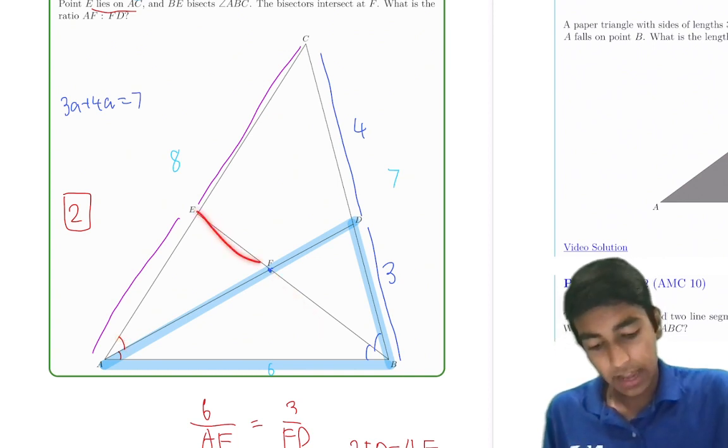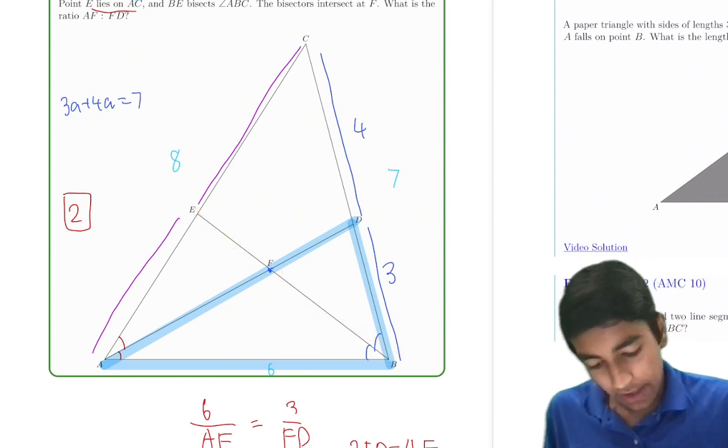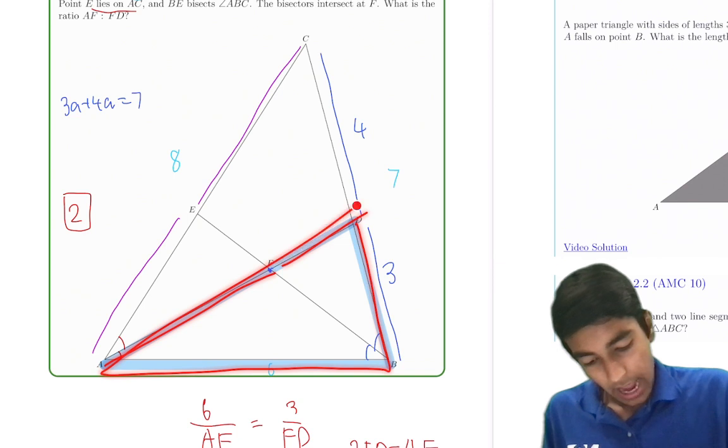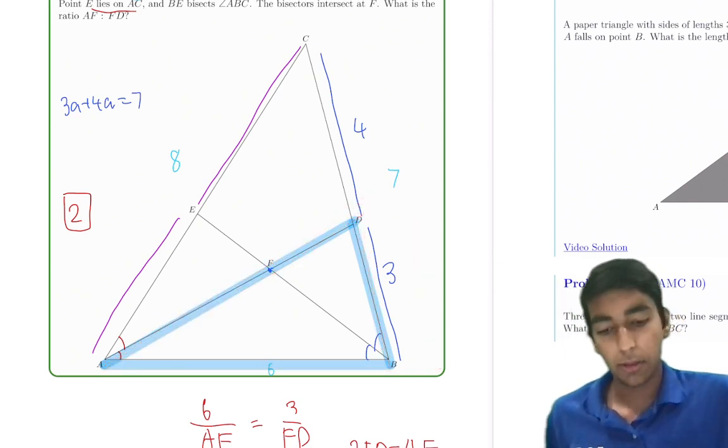and then use angle bisector theorem with this angle to find EF to FD. But because we wanted AF to FD, we wanted to look at this triangle here, and to do that, we needed BD, which we found earlier with the angle bisector theorem.